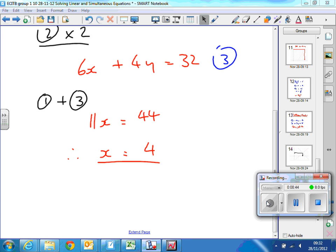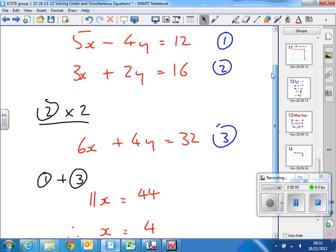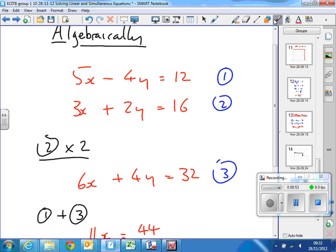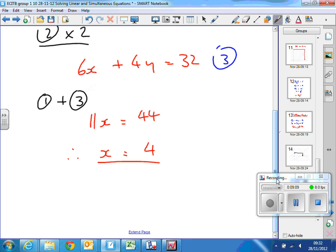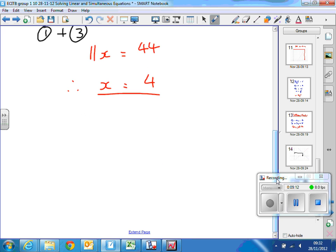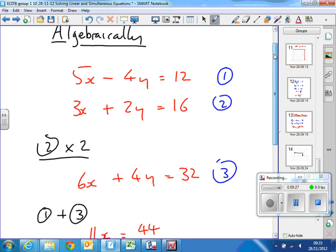Now we've got one of the values, x in this case. We can then substitute that value of x into one of the equations. It doesn't matter which - choose the easiest one. So equation number one, and now I know that x equals 4, so I can put that value back in. We substitute into equation 1. Rewrite equation 1: 5x minus 4y equals 12.